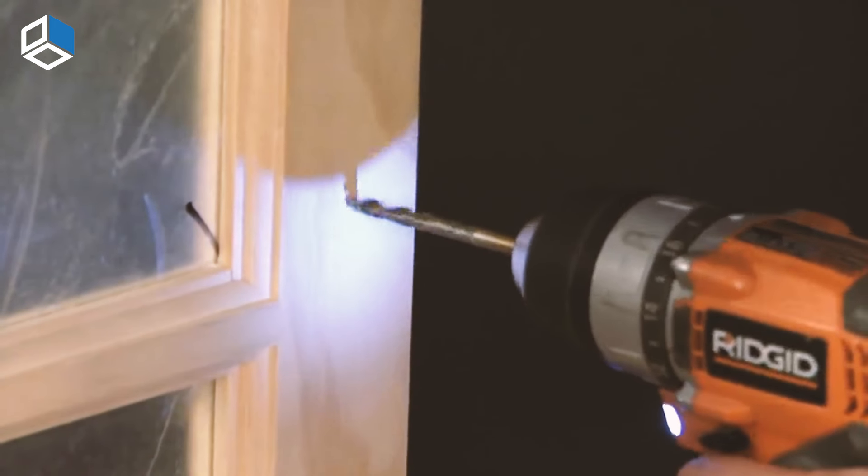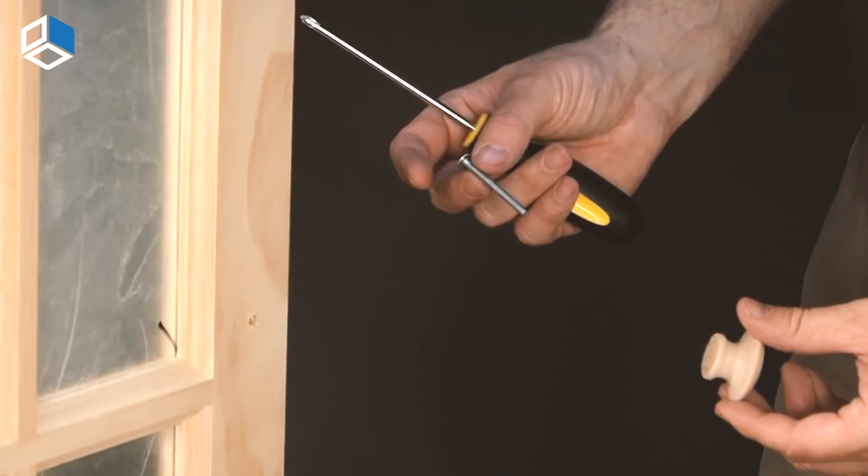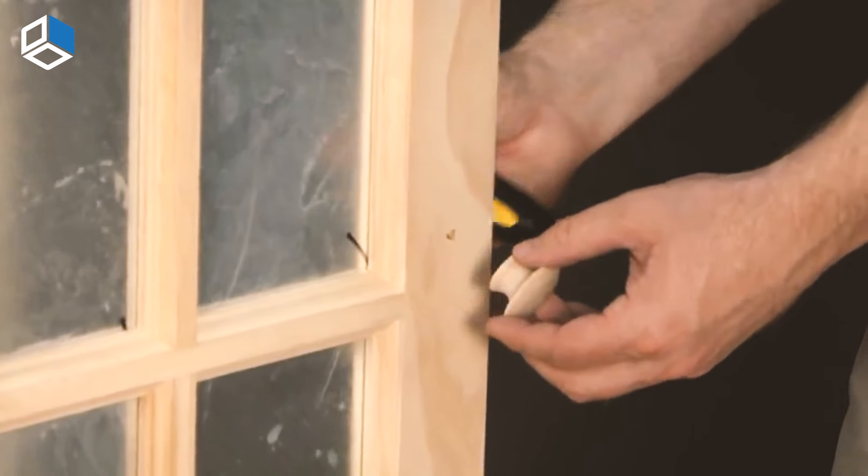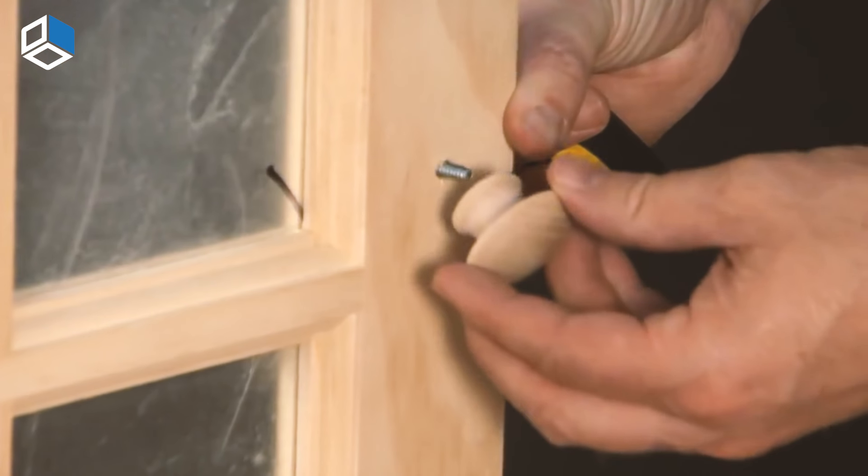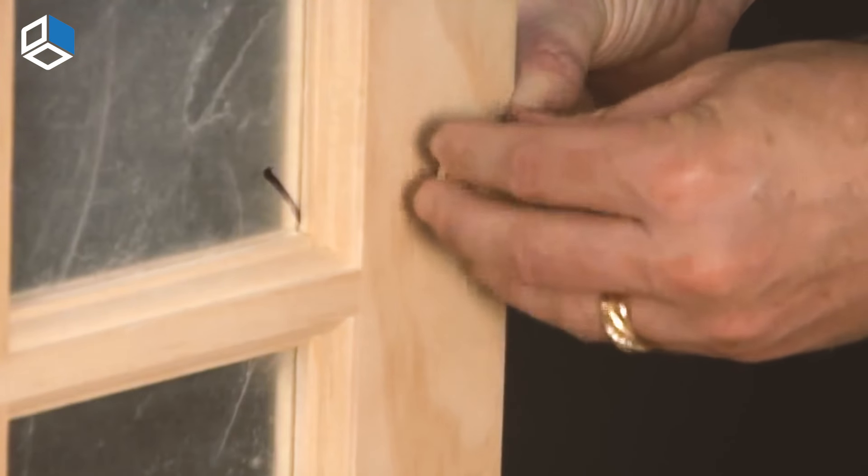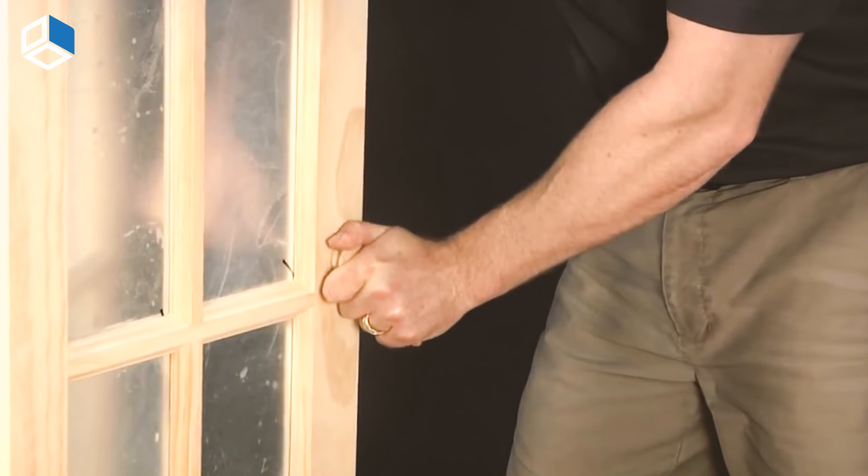Measure from the bottom of the door up approximately 36 inches for placement of your door handle. Make a pilot hole and attach the door handle with the screw provided. The handle can be centered on the outermost door in the center of the vertical style.